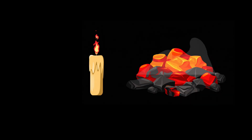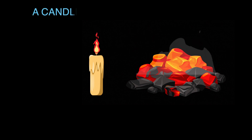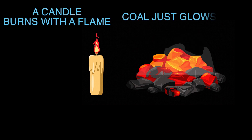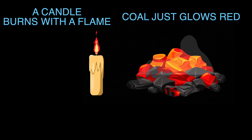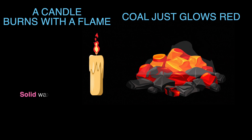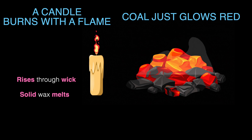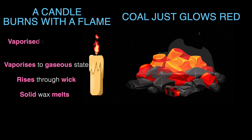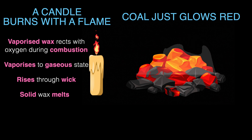So let's get back to our original question — the big mystery. Why does a candle burn with a flame but coal just glows red? Well, a candle burns with a flame because the wax melts first. The solid wax melts, rises through the wick, vaporizes to a gaseous state, and the vaporized wax reacts with oxygen during combustion — and you get a flame.